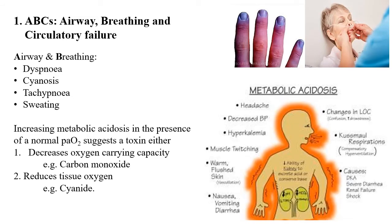For airway, breathing, and circulatory failure: dyspnea (difficulty in breathing), lack of oxygen, cyanosis (blue coloration due to lack of oxygen), and tachypnea (increased breathing rate) are key signs. Increased metabolic acidosis in the presence of normal partial pressure of oxygen suggests a toxin that either decreases oxygen-carrying capacity — for example, carbon monoxide — or reduces tissue oxygen utilization — for example, cyanide.